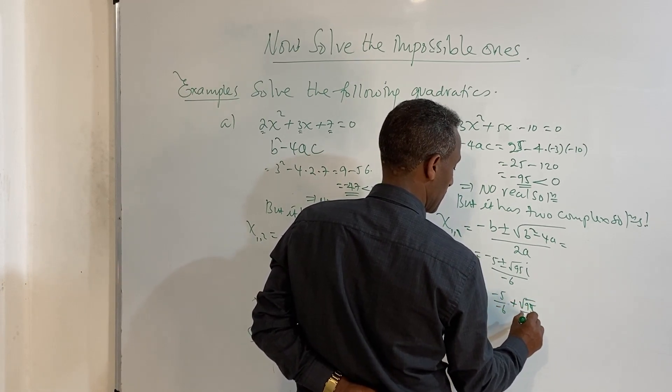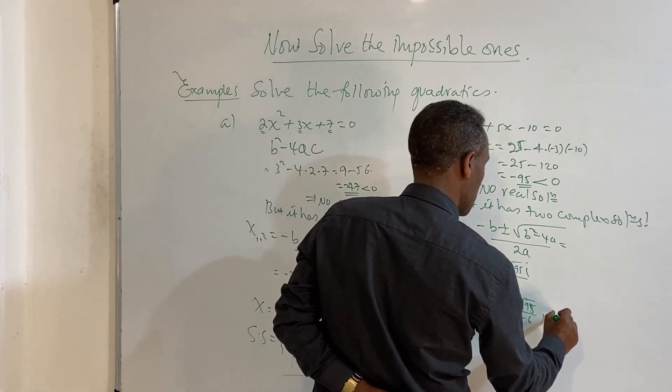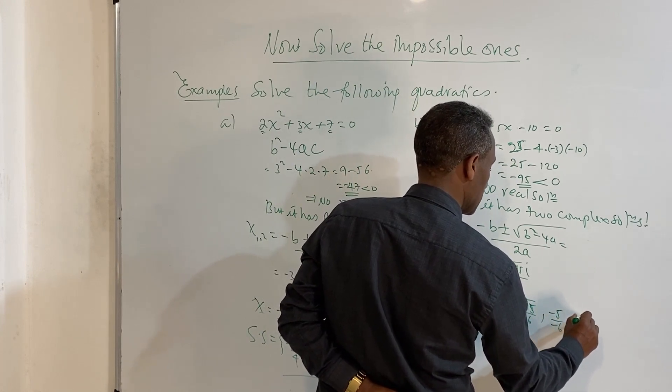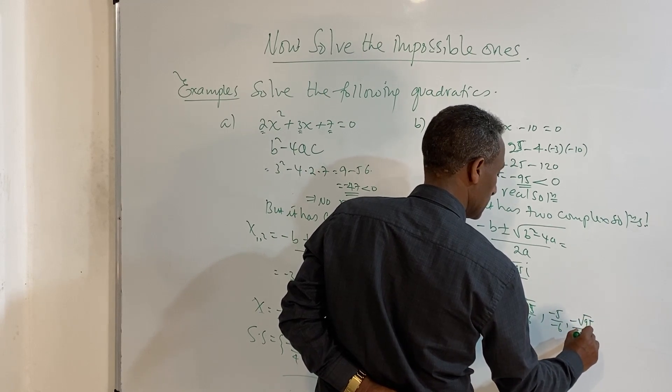The x1 and x2 are minus 5 over minus 6 plus or minus square root of 95i over minus 6.